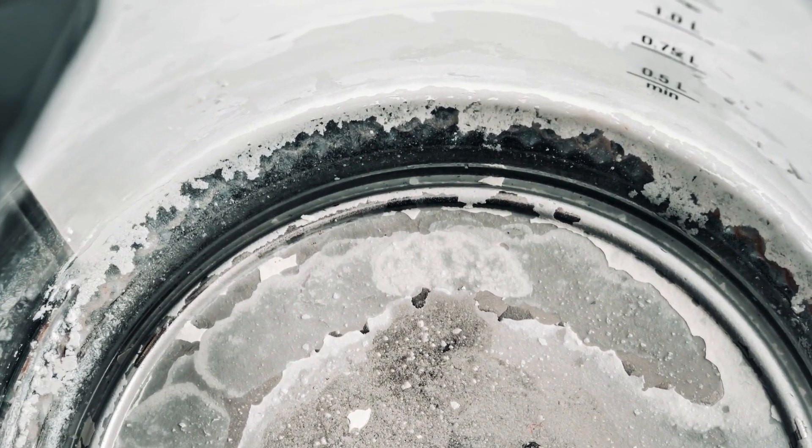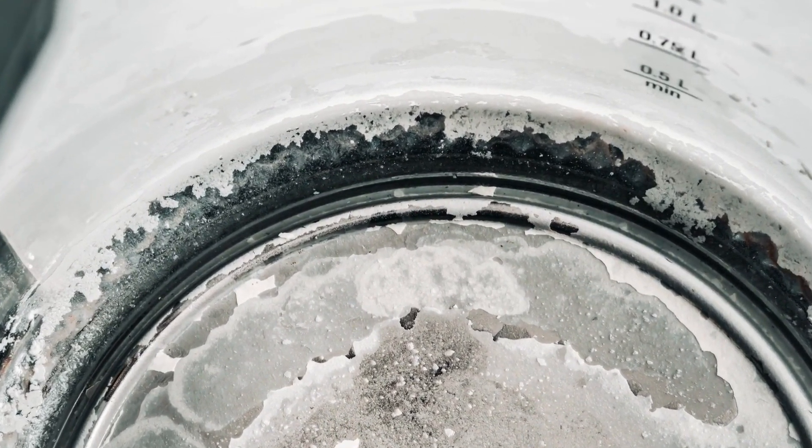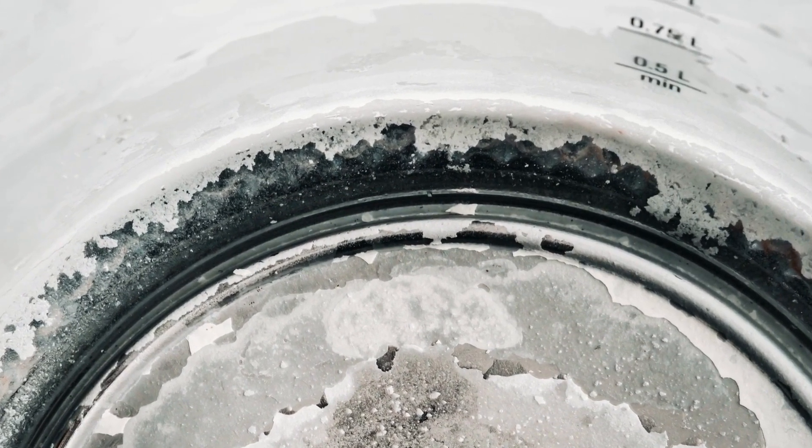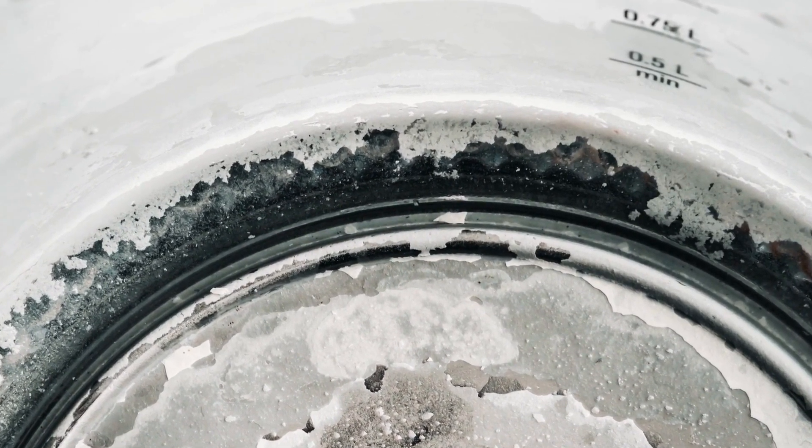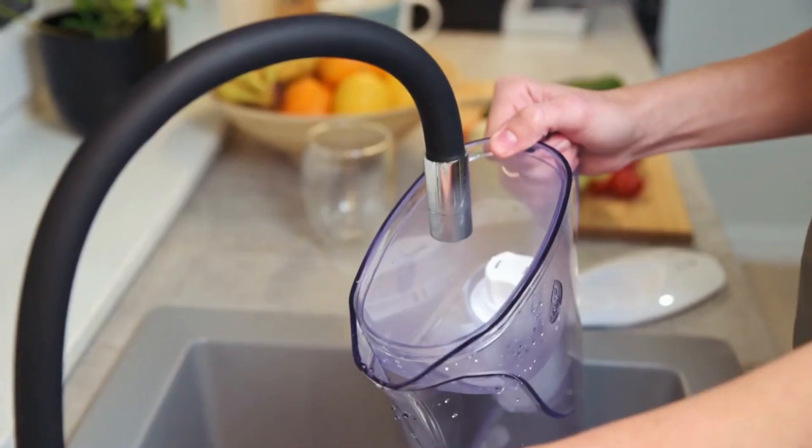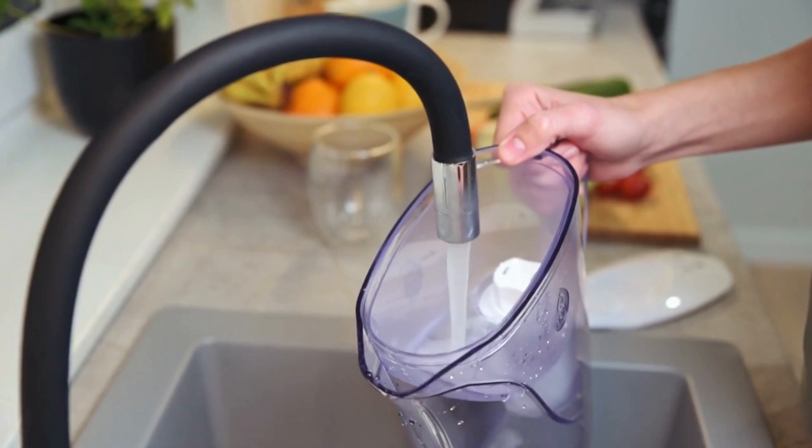In addition to regular maintenance, a deep clean of your water distiller should be performed every six months. This involves cleaning the entire machine, including the boiling chamber, lid, and filters. It's crucial to follow the manufacturer's instructions and replace filters as recommended.